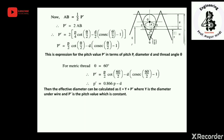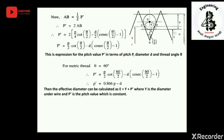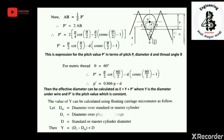The effective diameter can now be calculated as E = Y + p'. We have already found p' = 0.866p − d, where Y is the underwire diameter and p' is the pitch value which is constant.